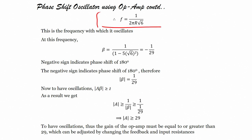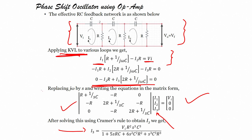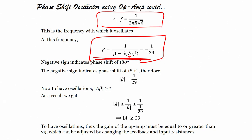This is the frequency at which the RC phase shift oscillator will oscillate. At this frequency, substituting α = √6 into the beta equation, β = −1/29. Summarizing the derivation: from KVL we write matrix equations, use Cramer's rule to get I₃, then V_O, then β. Setting the imaginary term to zero gives α and the formula for f. Substituting α = √6 gives β = 1/(1 − 5·√6²) = −1/29.